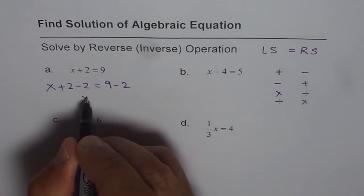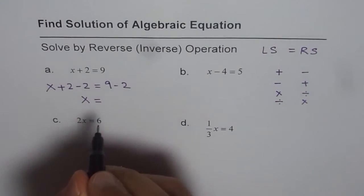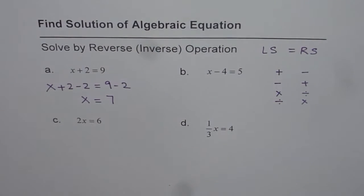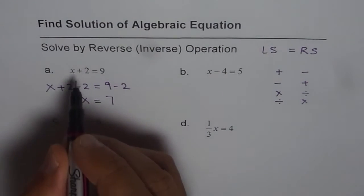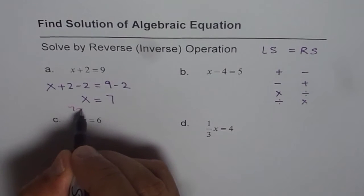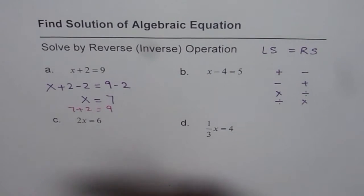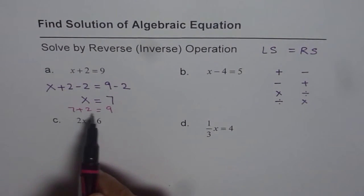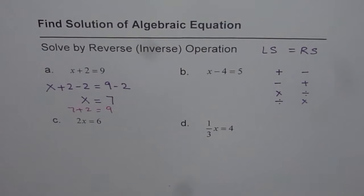In the next step, plus 2 minus 2 is 0. We are left with x equals 9 minus 2, which is 7. It's a good idea to check your solution. We get x equals 7, and 7 plus 2 is indeed 9. That means left side equals right side - the right solution. So that is the method. Simple but very useful.